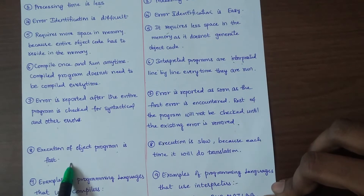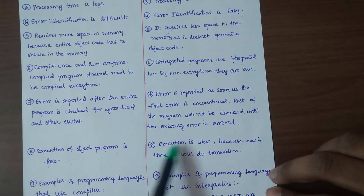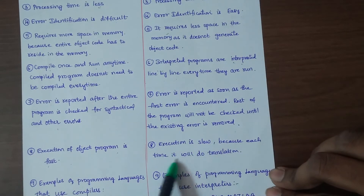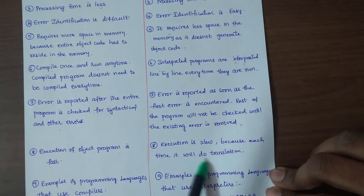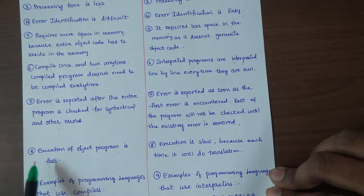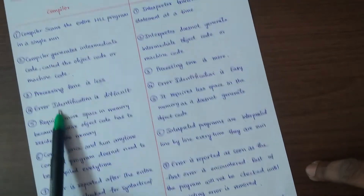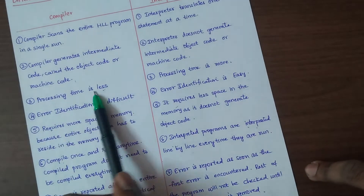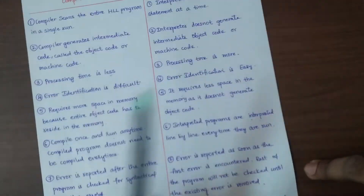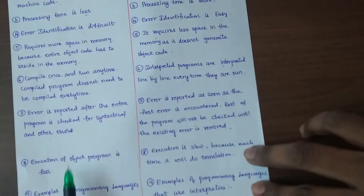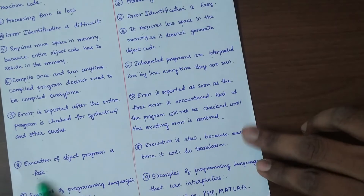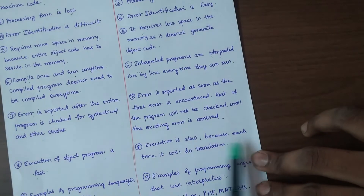Point 8: Execution of the compiled object file is fast. Interpreter execution is slow because each time it performs translation. In summary: compiler has less processing time and fast execution; interpreter has more processing time and slow execution.